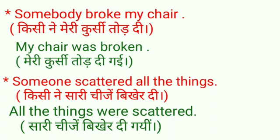पिछले वीडियो में भी मैंने somebody वाला प्रयोग बताया था। दूसरा example: 'Someone scattered all the things' — किसी ने सारी चीज़ें बिखेर दीं। Unknown subject है, तो ऐसे cases में 'by' का प्रयोग नहीं करते। 'All the things' हमारा object था जो अब subject बन गया — plural है इसलिए 'were' लिखेंगे। 'Scattered' का third form भी 'scattered' है। Passive: 'All the things were scattered.' सारी चीज़ें बिखेर दी गईं।